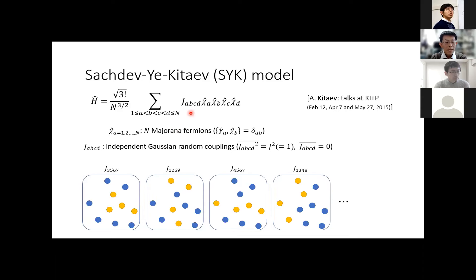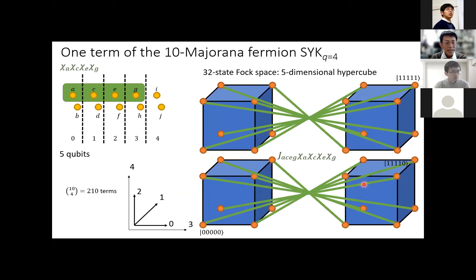The Majorana fermion version of the model looks like this. N is the number of Majorana fermions chi, and J_ABCD are independent Gaussian random couplings with constant variance and average zero. For any combination of four out of N Majorana fermions, as in this figure, we have one random coupling. Mathematically, we can see this as a hypergraph in which each edge connects not two but four vertices. We can generalize the model to other even numbers Q, like 6 or 8.